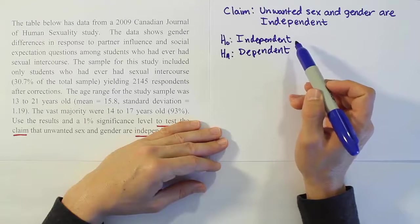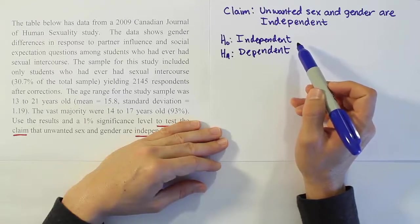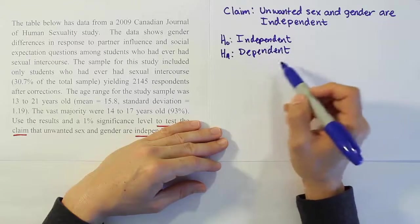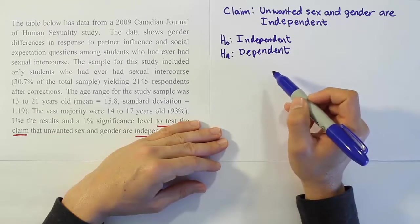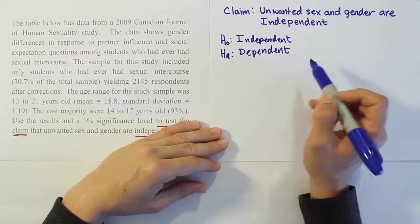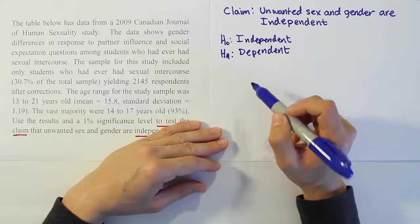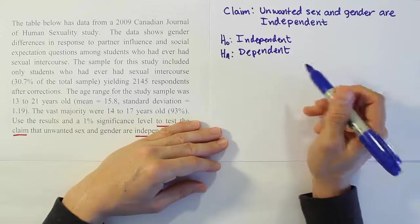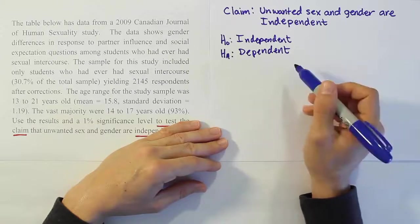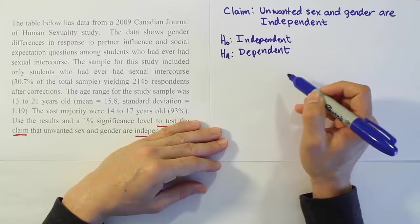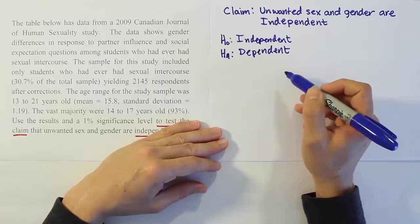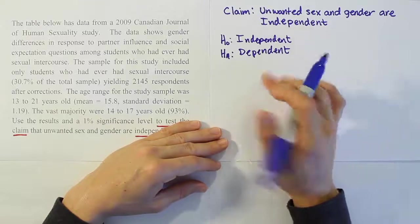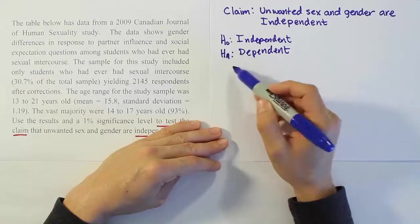Independence means they are unrelated in terms of probability, so that knowledge of one does not affect the outcome of the other. For example, if I say what's the probability that somebody has unwanted sex given that the person is female, that affects the probability. The probability of unwanted sex is generally not equal to the probability of unwanted sex given female. That would be an example of where things would be dependent.